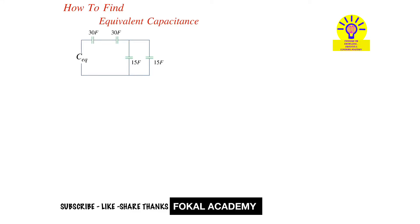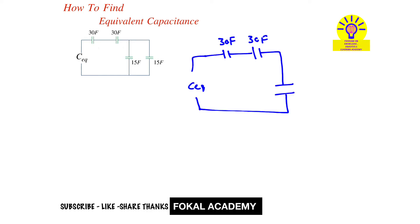Here a series-parallel capacitor circuit is given. How can you find the equivalent capacitance for the given circuit? First, observe that these two capacitors are in parallel, so replace these parallel capacitors with a single capacitor.